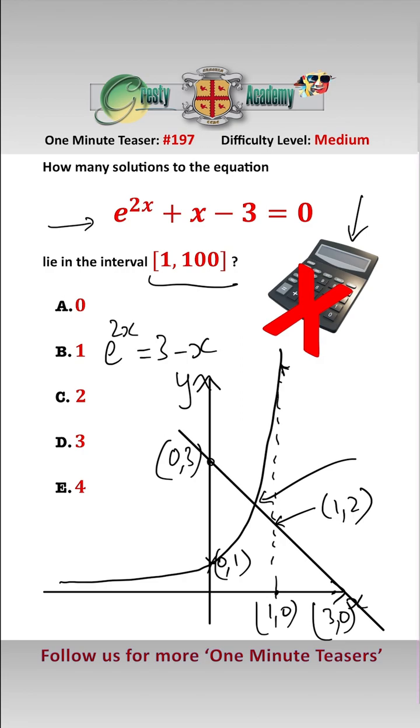Well that will go through the line at the point 1, 2, and it goes through the e to the 2x here at the point 1, e squared, which is approximately 7 something.